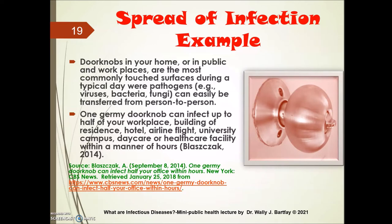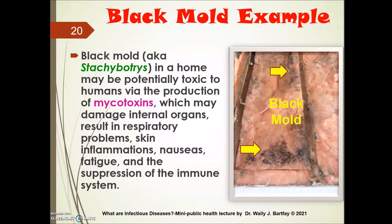The door to a washroom on an airline flight, a university campus, a daycare, or a healthcare facility can harbor pathogens within a matter of hours. Here is an example related to mold or fungi in the house, which is very common where there is moisture. Black mold growing in a basement may be potentially toxic to humans via the production of mycotoxins, which can become airborne and damage internal organs, cause respiratory problems, skin inflammation, nausea, fatigue, and immune suppression.